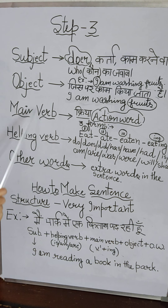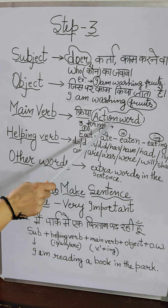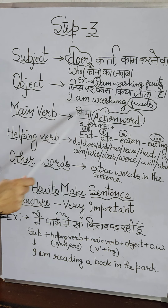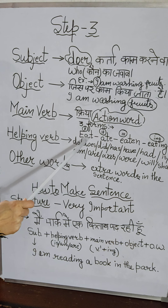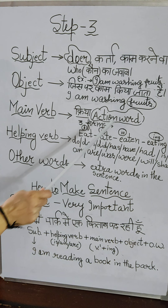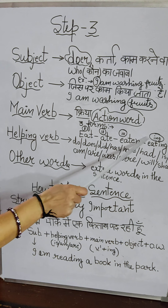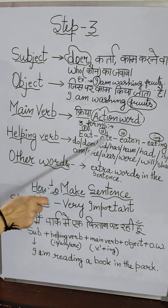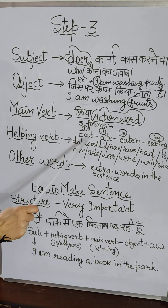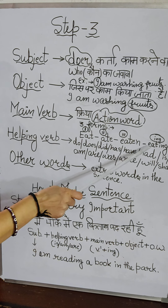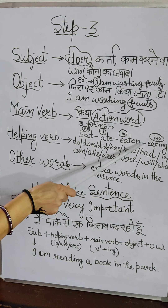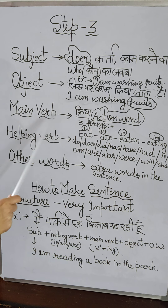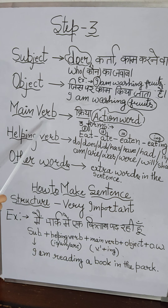Then we talk about the main verb. When we make a sentence, we put a verb. What is a verb? Verb is 'kriya' — kriya is called an action word. An action word is the word that tells us how to do some work. For example: eat, eating, eaten — if we add -ing, 'eat' becomes 'eating'. When we make a sentence we use an action word, a verb.